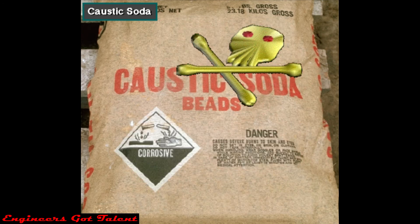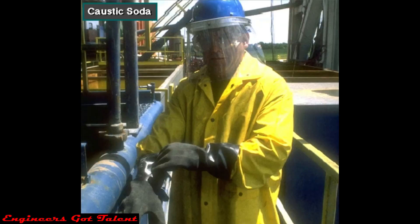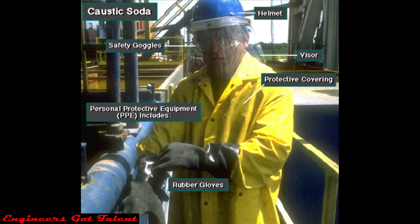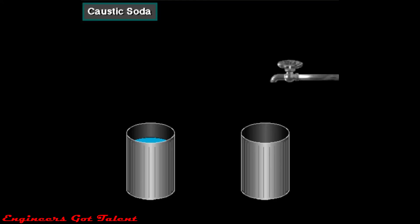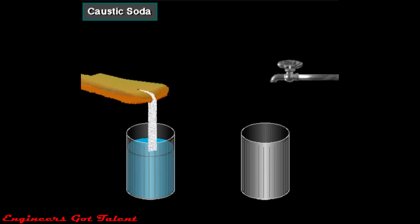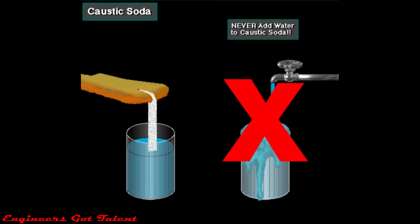In general, caustics are the most dangerous chemicals that you will handle on the rig. High-strength solutions can seriously burn your skin — be very careful when handling it to avoid injury. Wear the proper personal protective equipment. Also, remember to always add caustic soda to water; never add water to caustic soda. If you do, the caustic soda will boil up, splatter, and cover you with a burning chemical.